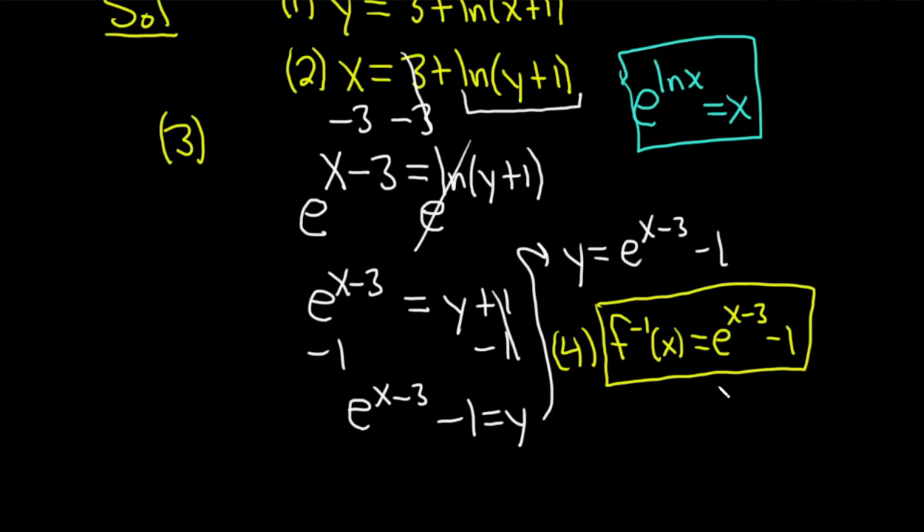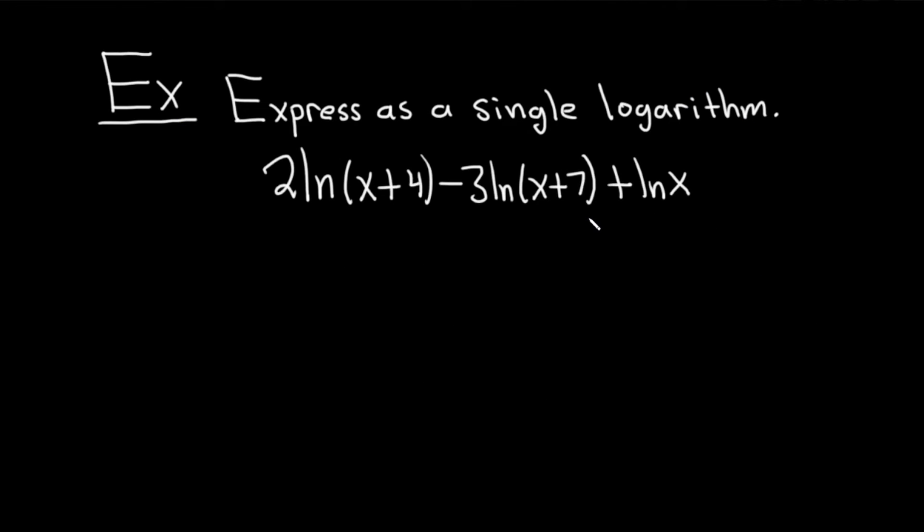Okay. Let's do something a little bit different. In this example, we are going to express as a single logarithm. So we have this logarithmic expression. It's 2ln(x+4) - 3ln(x+7) + ln(x). And we have to write it as a single logarithm. Let's go ahead and carefully work through this solution. So in this problem, we're going to use every single property of logarithms, which makes it extra cool in my opinion.